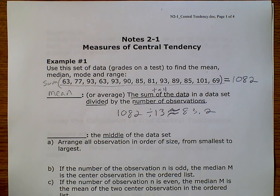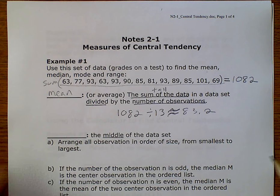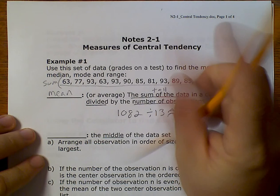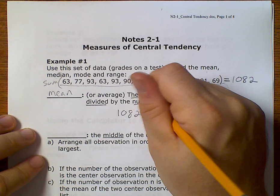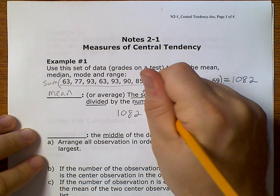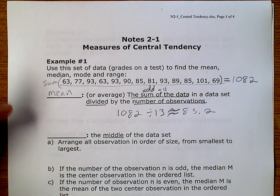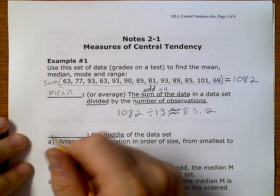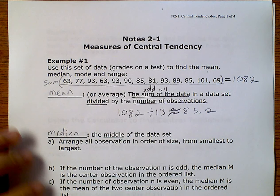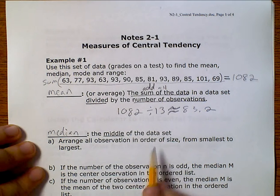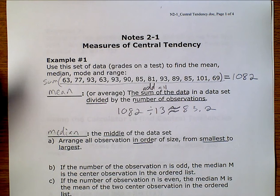Now we're going to look at the middle of our data set — this is the median. To find the middle, I need to put the data in order from smallest to largest, though largest to smallest will also work.